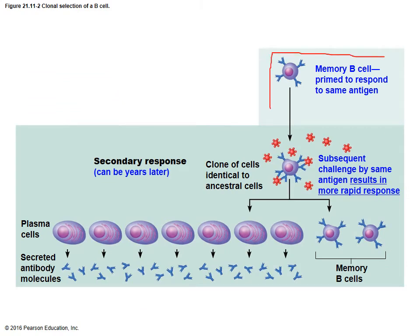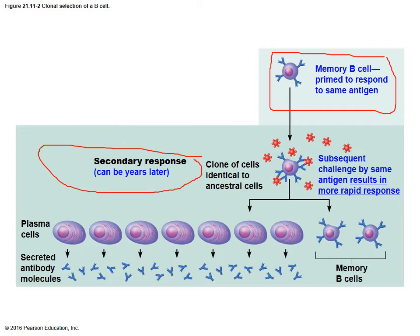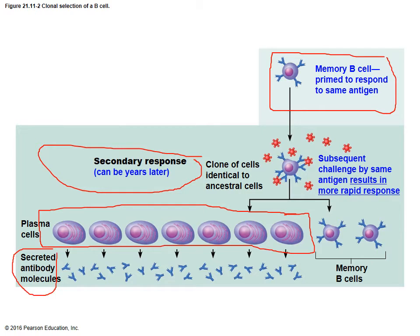When your body encounters a secondary exposure to that same antigen — whether a few weeks or years later — the memory B cell quickly becomes activated and allows for a more amplified and rapid response. It produces a high amount of plasma cells quickly, secreting antibodies in a much higher concentration than during the initial exposure. New memory B cells are also generated to continue tracking this antigen.